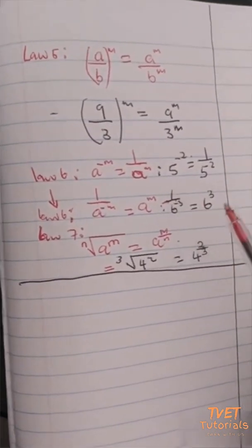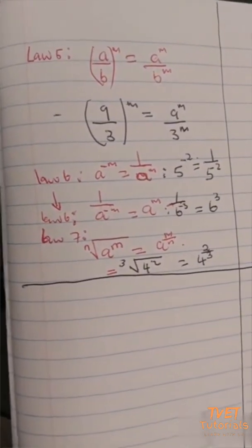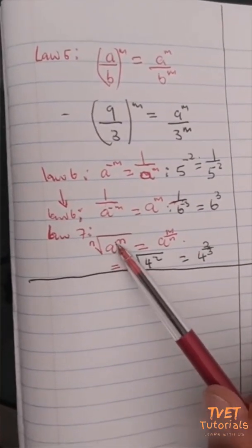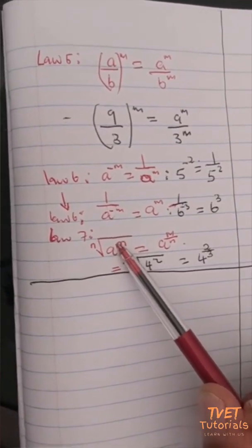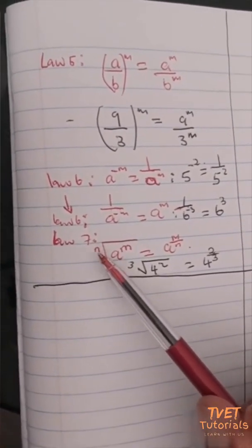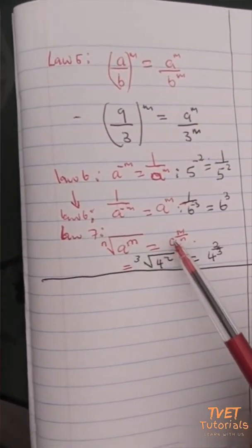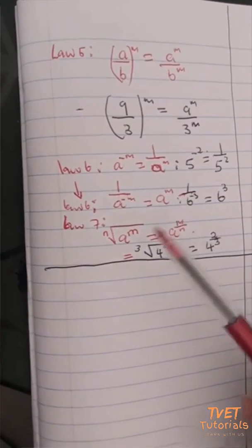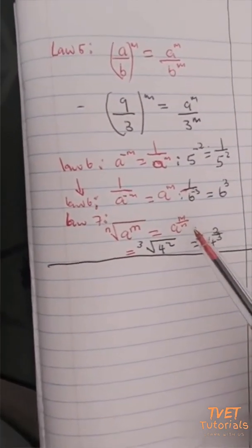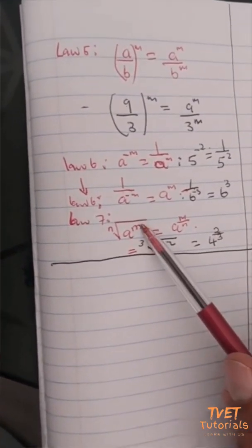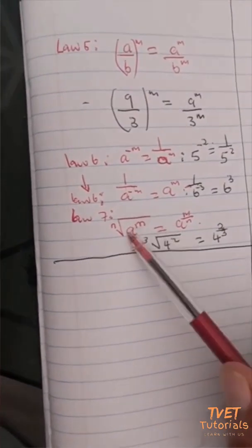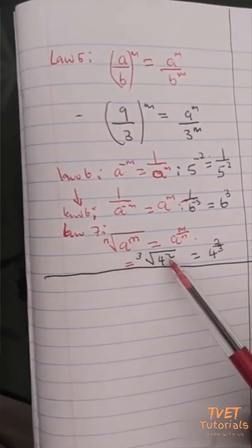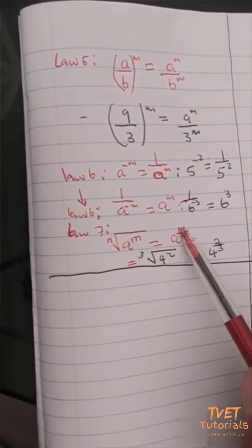The last law, law number seven, is about surd form or roots of numbers. If I have a number a raised to the power m, under an nth root, this can be represented as a raised to the power m divided by n. Do not swap them around — it's always the power that's inside the root divided by the number that's outside the root.